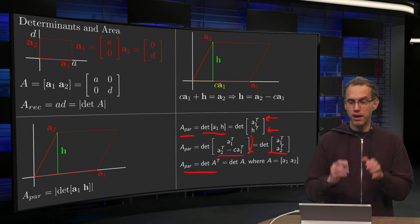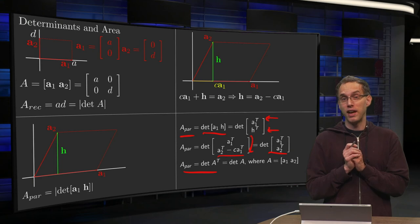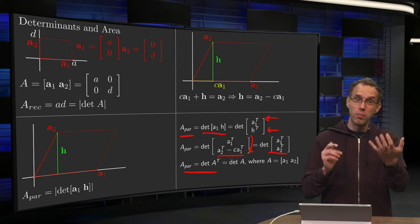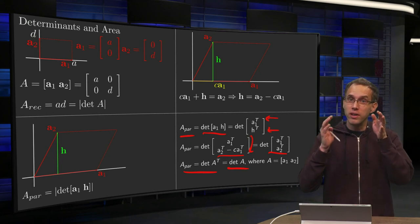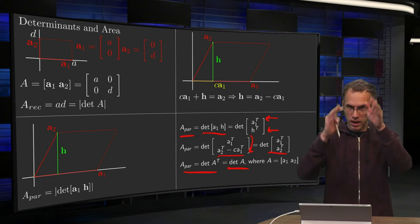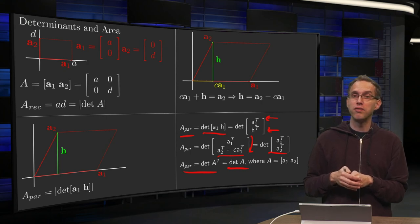So the area of your parallelogram equals the determinant of A transpose. Well, but the determinant of A transpose is the same as the determinant of A. So the determinant of A—should put absolute values if it's negative, of course.